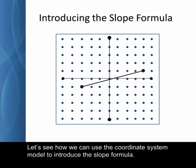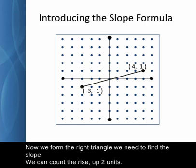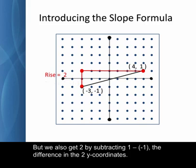Let's see how we can use the coordinate system model to introduce the slope formula. This rubber band is stretched between the points negative three, negative one, and four, one. Now we form the right triangle we need to find the slope. We can count the rise up two units. But we can also get two by subtracting one minus negative one, the difference in the two y coordinates.